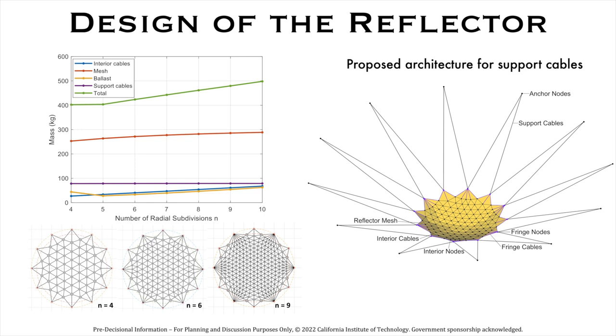The contribution of the mass from tension cables and compliant mesh for different number of subdivisions is shown in the left. The proposed architecture of the lift wires for nominal operation is also shown here.